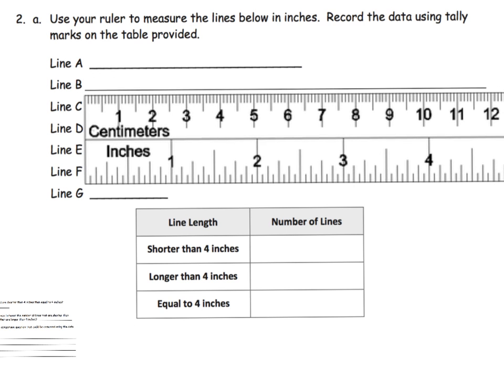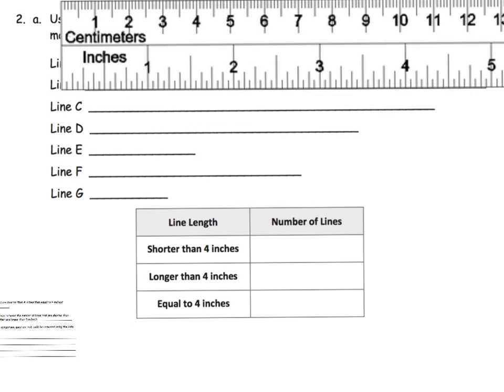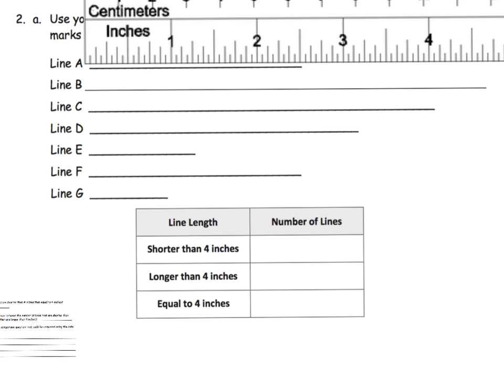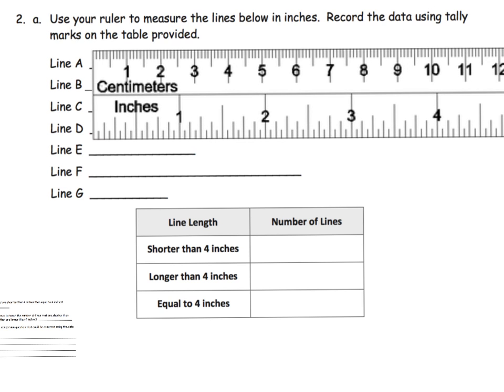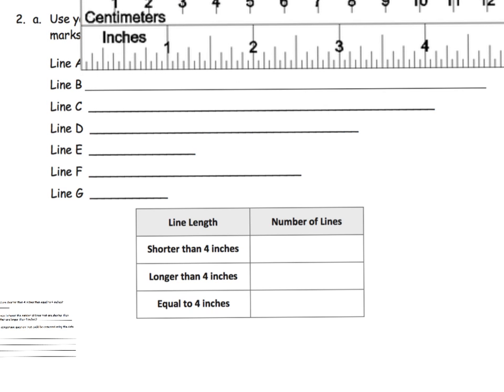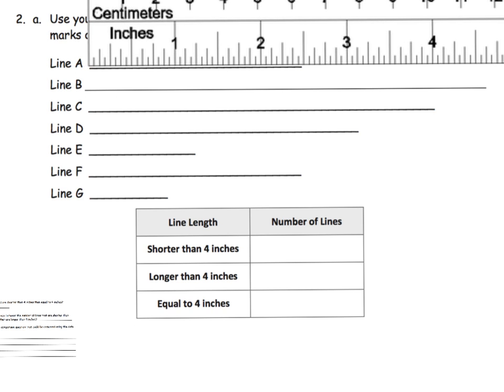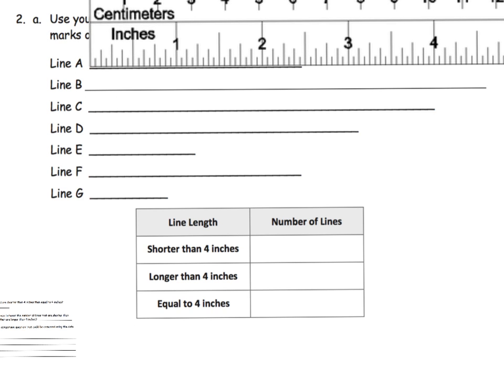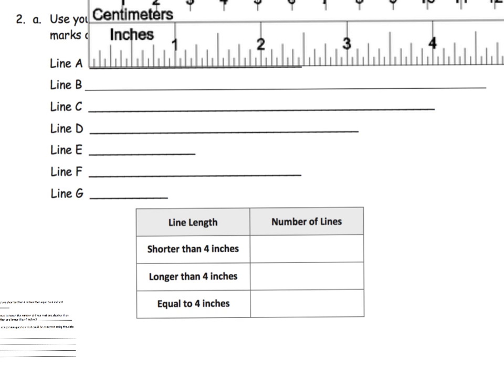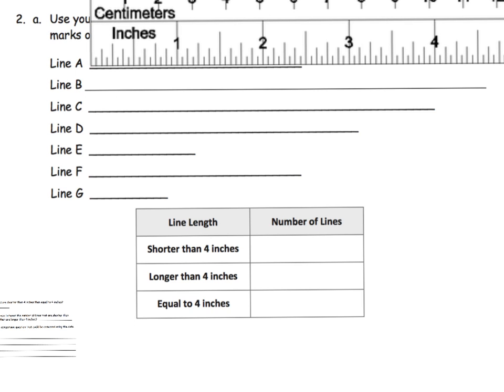And the idea is we're going to measure and I'm going to start with line A. And of course, we traditionally line up our line with the zero on the ruler, although in the last few lessons we learned that you didn't actually have to do that. You could get the measurements even when you don't line it up with zero, but I'm going to line up my ruler and I see that this is between two and three, it's about two and a half inches.